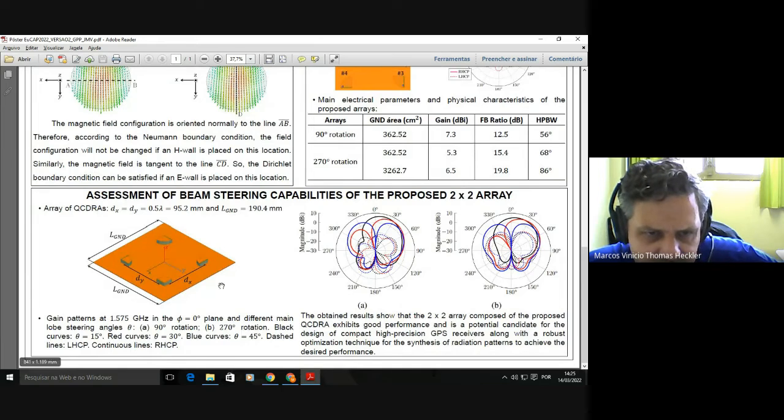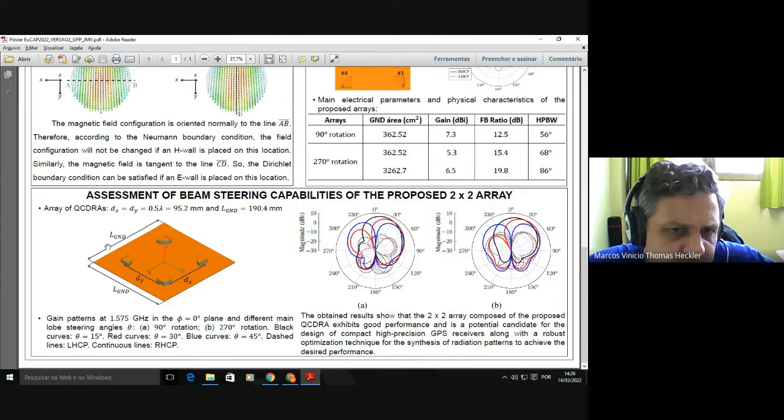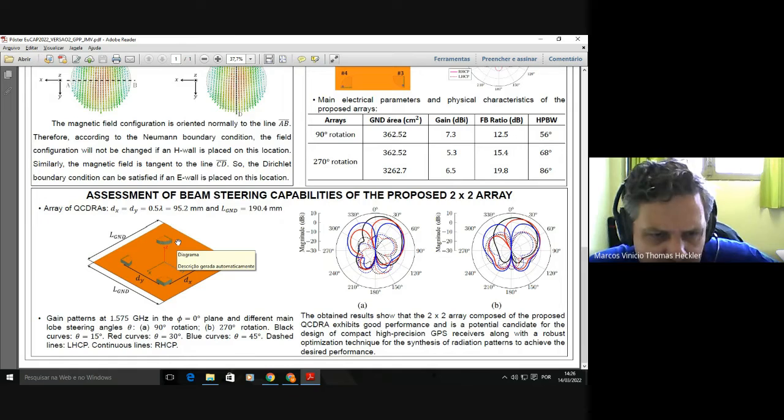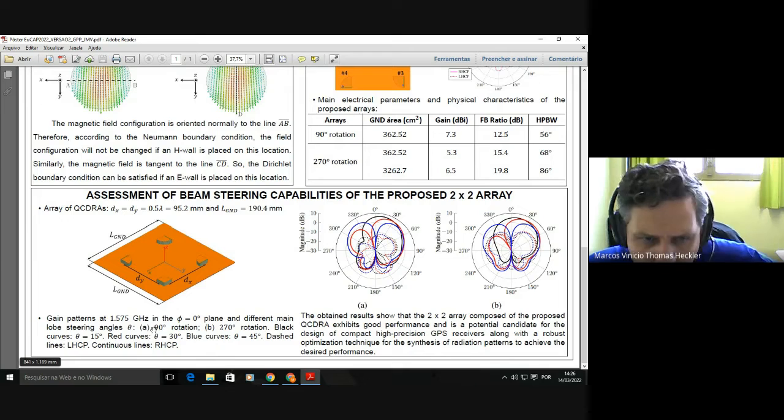In order to see how the main beam can be steered, we decided to simulate this array here in HFSS, where we have four elements in a 2x2 configuration. Adjacent antennas are spaced uniformly by 0.5 lambda, which equates to 95.2 millimeters at this frequency, and a total edge size for the ground plane of 190.4 millimeters. The results for three beamforming cases are shown here on the right. All the patterns have been computed for the L1 GPS frequency, 1.575 gigahertz.